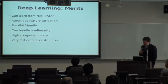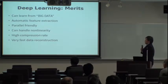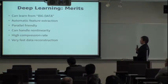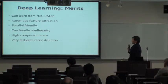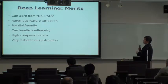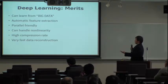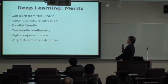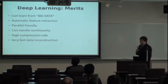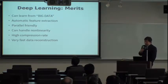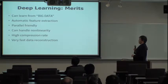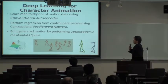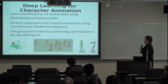Coming back to the merits of deep learning: it can learn from big data — millions of images or millions of motion data points. It also does automatic feature extraction, so you don't need to manually define what a face is composed of. You just dump all the images to the system. It's also parallel-friendly, handles non-linearity, achieves high compression rates, and enables very fast data construction.